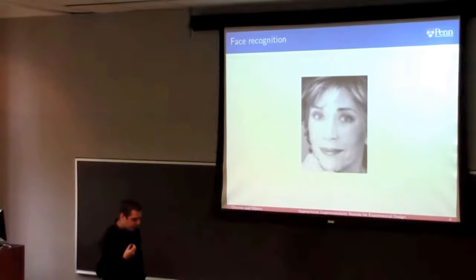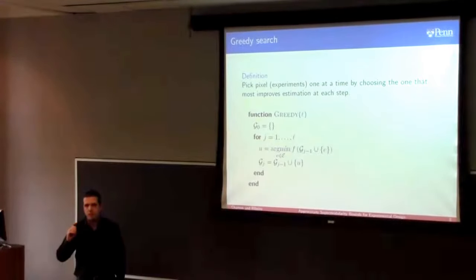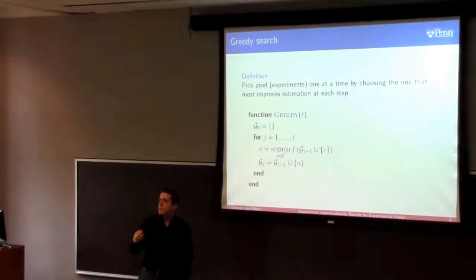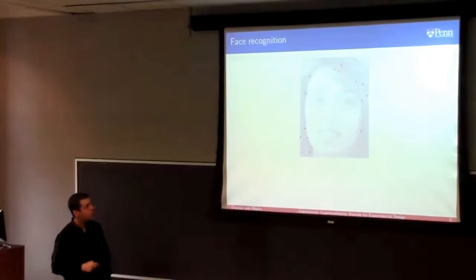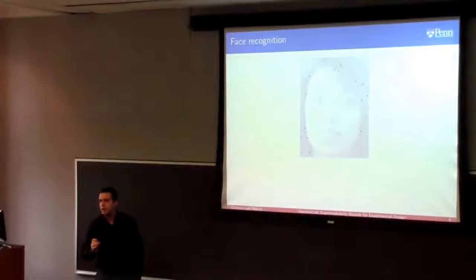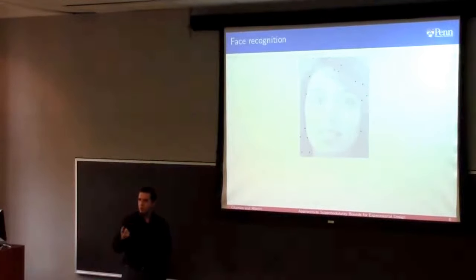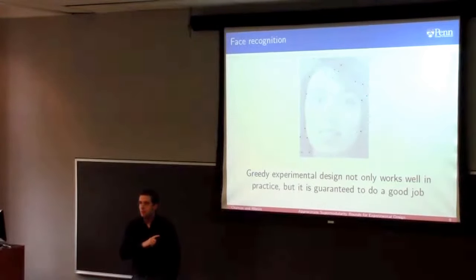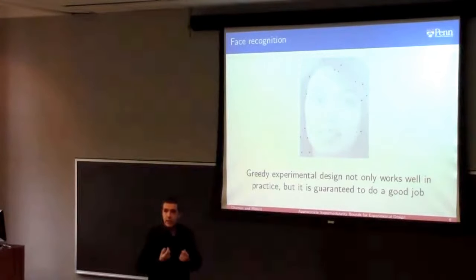So we need a principled way to choose these pixels, and the way people usually do this is by greedy search — picking pixels one at a time, choosing whichever pixel most improves our classifying abilities, minimizing the misclassification error. If we do this on the picture of Jane, we can actually find a set of 35 pixels from which we can recognize Jane with the same misclassification error as if we were looking at the whole picture. The main takeaway of this talk is that greedy experimental design not only performs very well in practice, but is also guaranteed to do a good job.